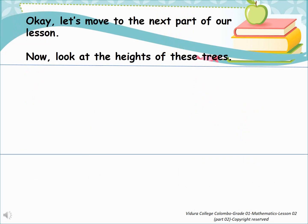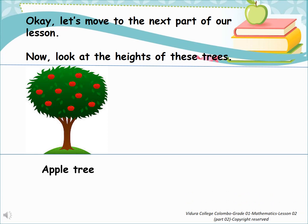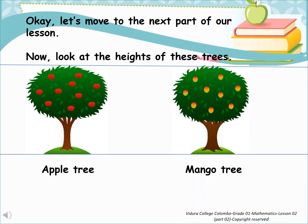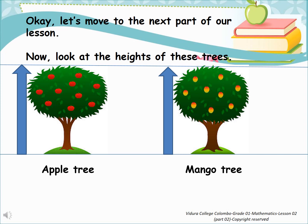Let's move to the next part of our lesson. Now look at the heights of these trees. There is an apple tree. There is a mango tree. Are there any difference between their heights? Look at these arrows — you can see these two arrows are in the same line. So we can say the apple tree and mango tree are same in height.